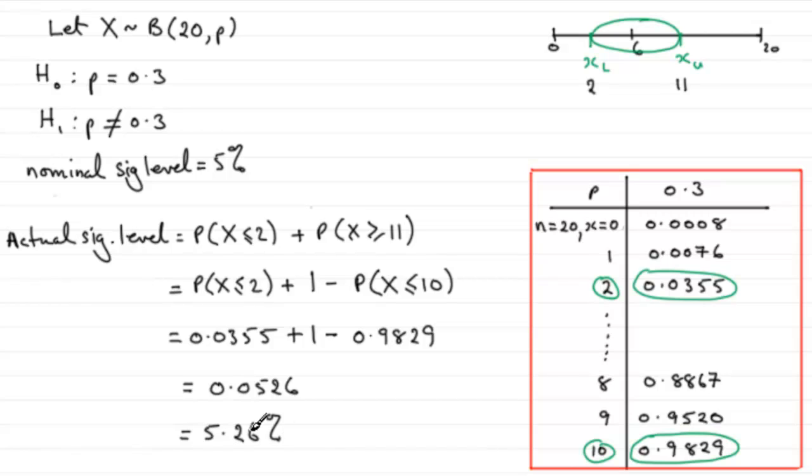So clearly the actual significance level is not our nominal significance level, which was 5%. It turns out that the actual level is just a little bit more, 5.26%.